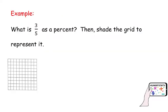So let's do some examples. What is 3 fifths as a percent? When you're done, shade the grid to represent it. As I told you, percent means per hundred. We need to convert this fraction, 3 fifths, to an equivalent fraction with denominator 100.